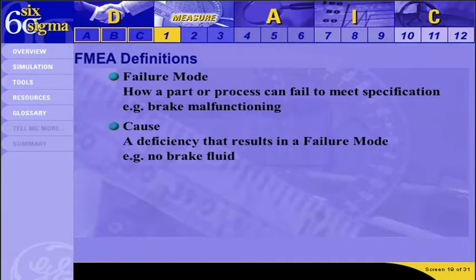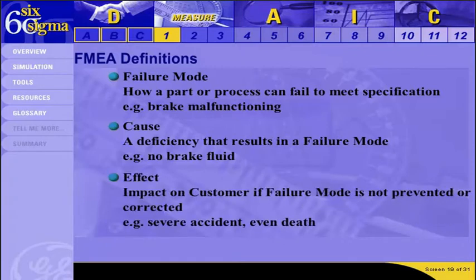A cause describes a deficiency that results in a failure mode. Causes are sources of variability associated with key process input variables. For example, no brake fluid would cause the malfunction. The effect describes the impact on a customer if the failure mode is not prevented or corrected. The customer can be downstream or the ultimate customer. In the car example, the effect of a brake malfunction could be quite severe, even fatal.